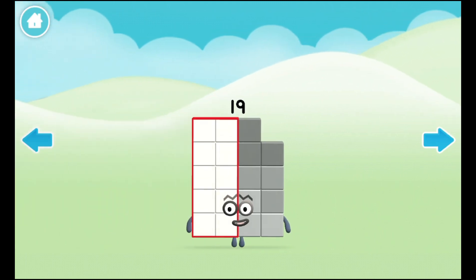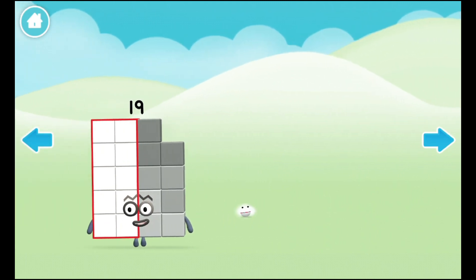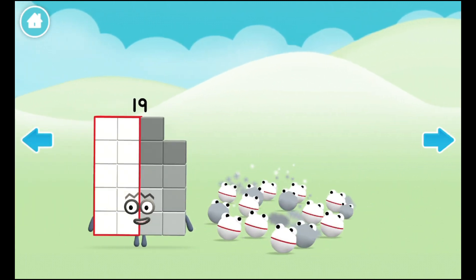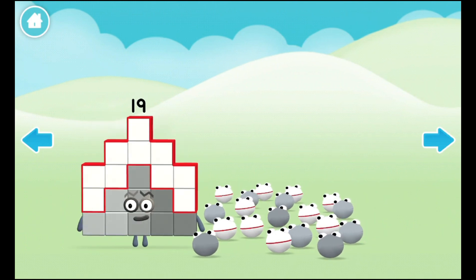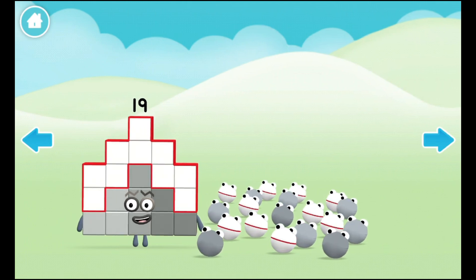Old MacDonald had a farm. E-I-E-I-O. Hello, hello. And on his farm he had some sheep. E-I-E-I-O. With a baa. I am nineteen. And I am a one-off.